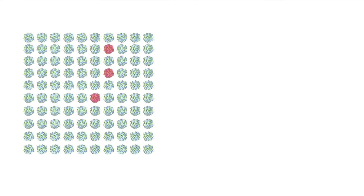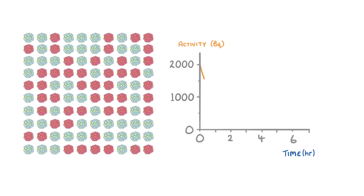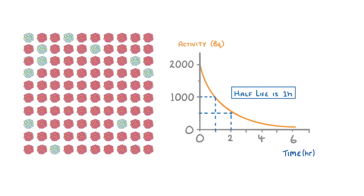If we had a different radioactive sample, we can see that it is decaying much more quickly. This means that it started with a much higher activity, as we can see on our graph, and also that it will decline much more rapidly — giving a much shorter half-life, this time of 1 hour.